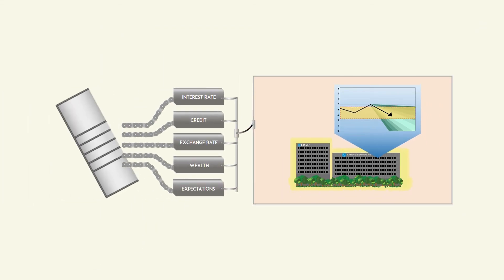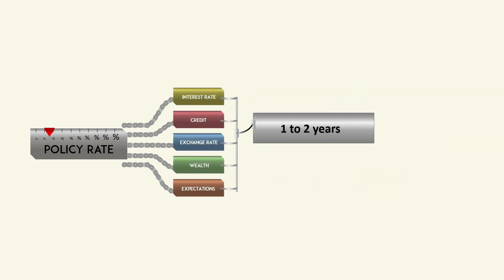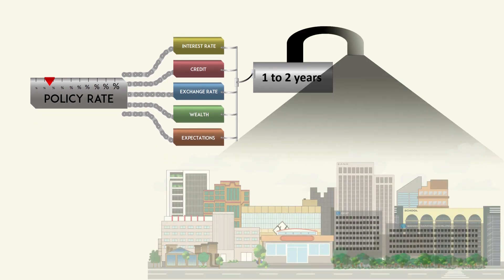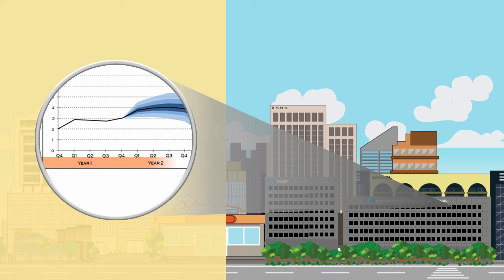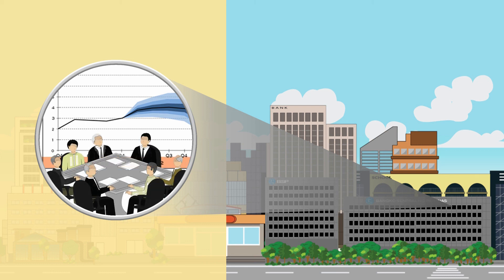Any change in the BSP's policy rate, which is transmitted through various channels, takes one to two years before it is fully felt across the economy. Therefore, the BSP looks at inflation forecasts in the next two years and takes action now, if needed, to meet the inflation target for the said period.